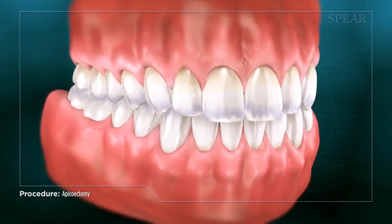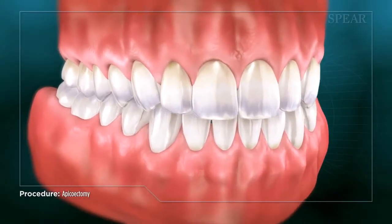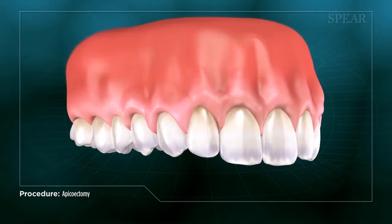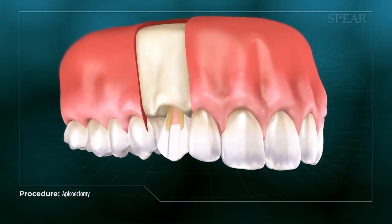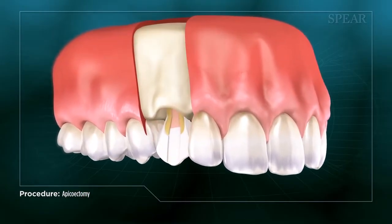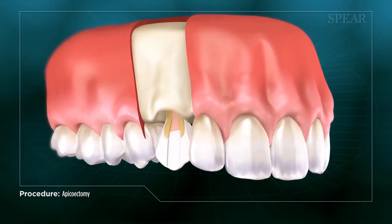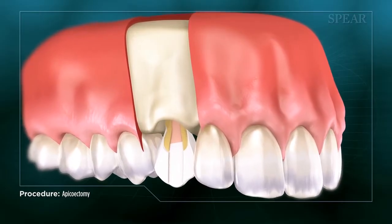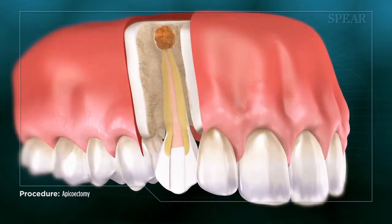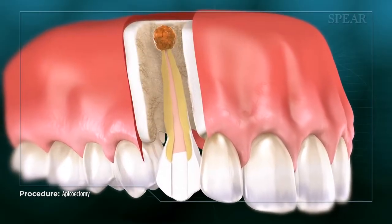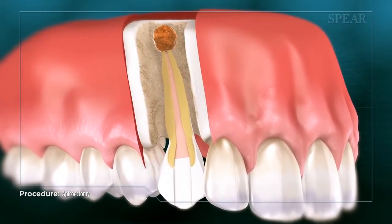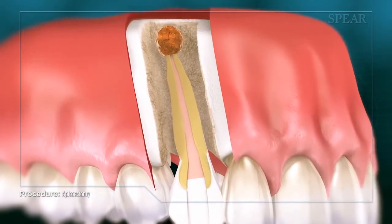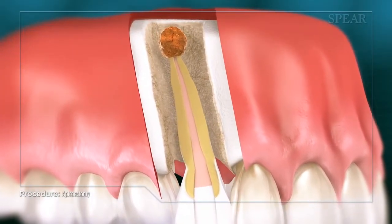Sometimes, even after endodontic treatment, more commonly known as a root canal, has been performed on a tooth, there can be a residual infection remaining at the end of the root. In such a case, your doctor may recommend a procedure called an apicoectomy be done to remove the infected area.